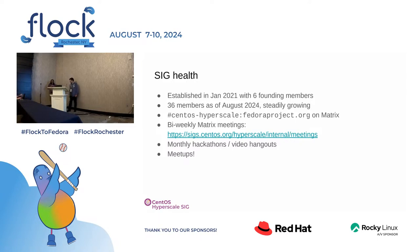We founded the SIG in January 2021 with six founding members including David and myself. As of right now we have 36 members with more in the queue, so it's steadily growing. We originally started on IRC and are now on Matrix with a fancy room on the Fedora server. We have bi-weekly meetings — thank you Fedora project for making meetings on Matrix possible — and we also have monthly hackathons and video hangouts for a social aspect.